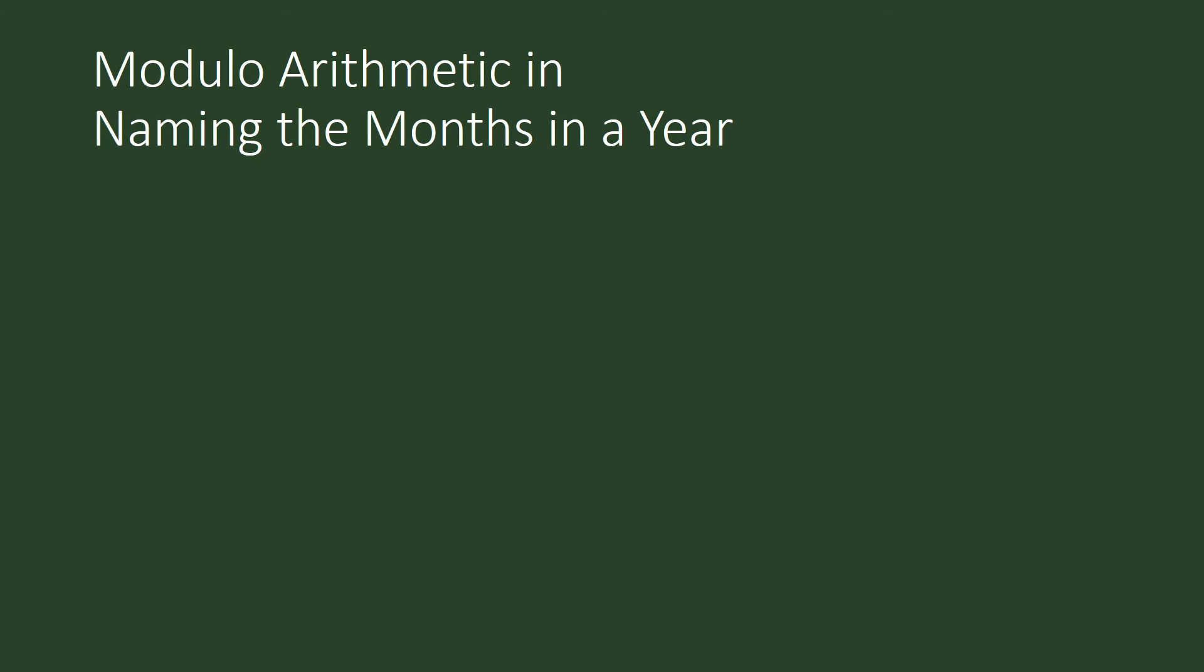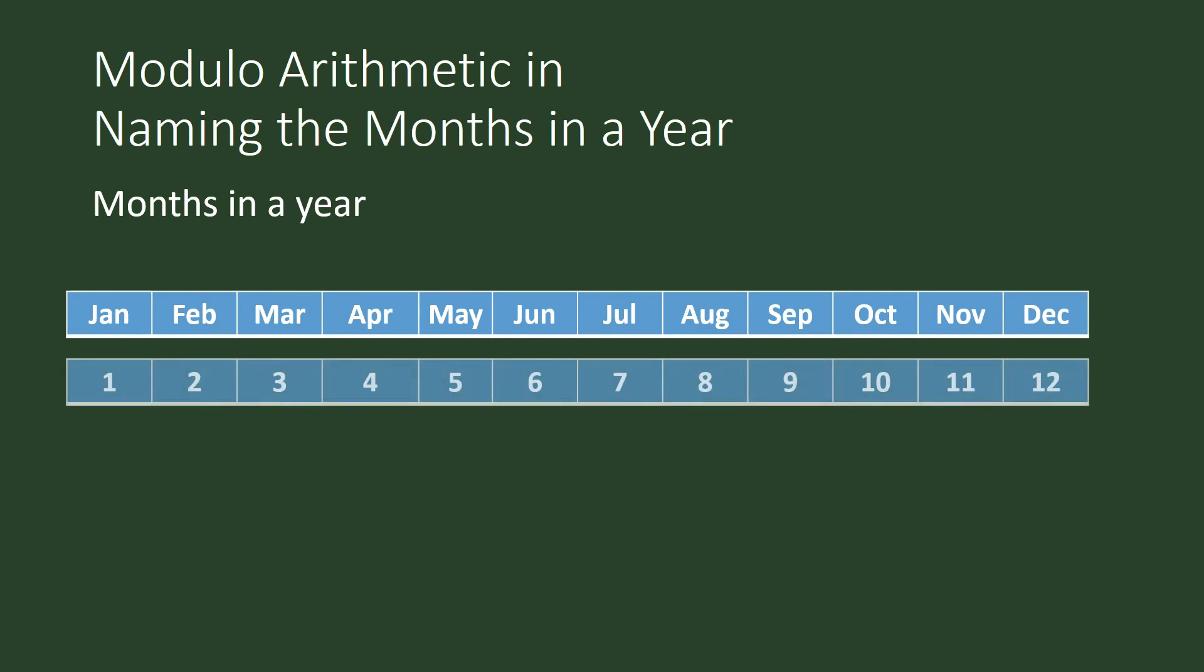We also do modulo n arithmetic when naming the months in a year. We begin with January as 1, February as 2, and so on. When we go to December, that's the 12th month, and then we begin again from the start. Whenever you have a phenomenon or human activity that runs in cycles, we can count the processes involved, and the manner of counting is cyclic. It is comparable with how we do modulo n arithmetic.